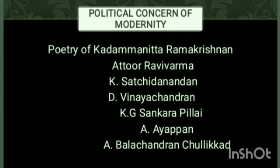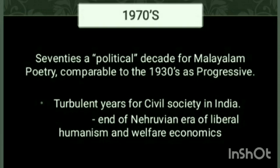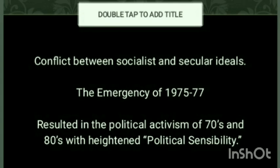Poets associated with political modernism include Attoor Ravi Varma, K. Satchidanandan, D. V. Nechandan, K. G. Shankarapillai, and A. I. Appin. The 1970s was a political decade for Malayalam poetry, comparable to the progressivism of the 1930s. The age witnessed heightened political activism, turbulent years for civil society in India, the end of the Nehruvian era of liberal humanism and welfare economics, conflict between socialist and secular ideals, and the Emergency of 1975. All these resulted in political activism of the 1970s and 80s with heightened political sensibility, clearly reflected in the different forms of 20th century Malayalam literature.